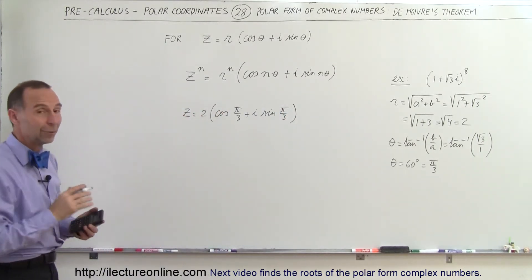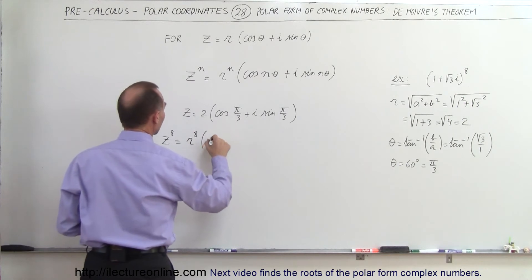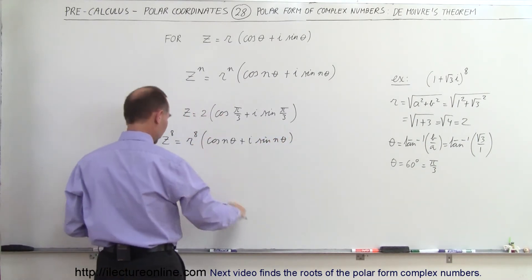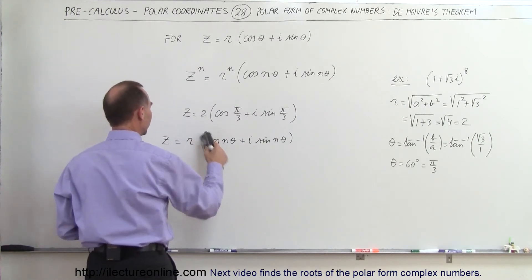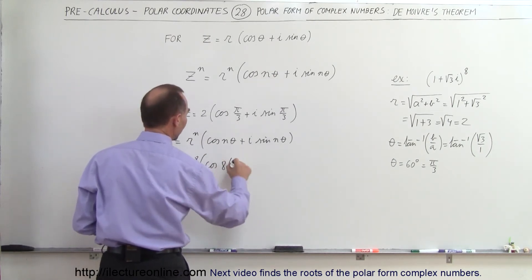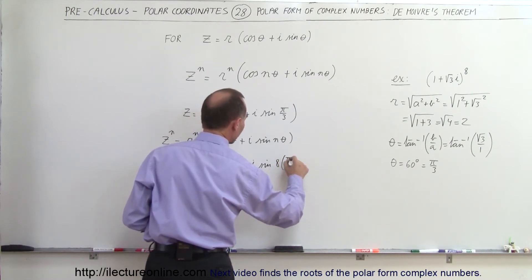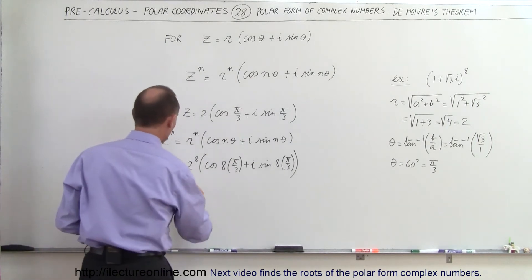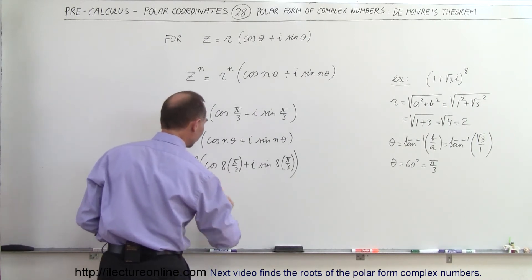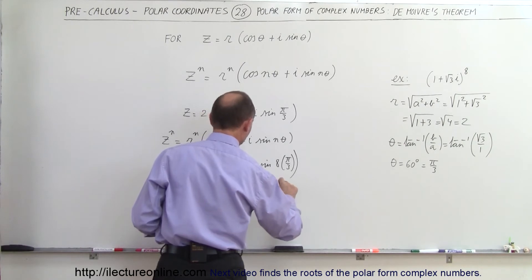Now let's go ahead and take that number and raise it to the 8th power. z to the 8th power is equal to r to the 8th power, times the cosine of n times the angle, plus i times the sine of n times the angle. That means this is 2 to the 8th power, times the cosine of 8 times pi divided by 3, plus i times the sine of 8 times pi divided by 3. So 2 to the 8th power is 256, giving us 256 times the cosine of 8 pi over 3, plus i times the sine of 8 pi over 3.